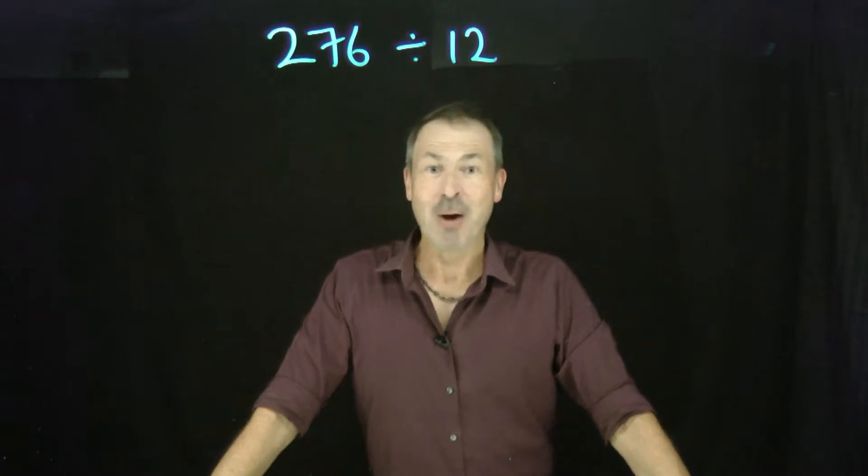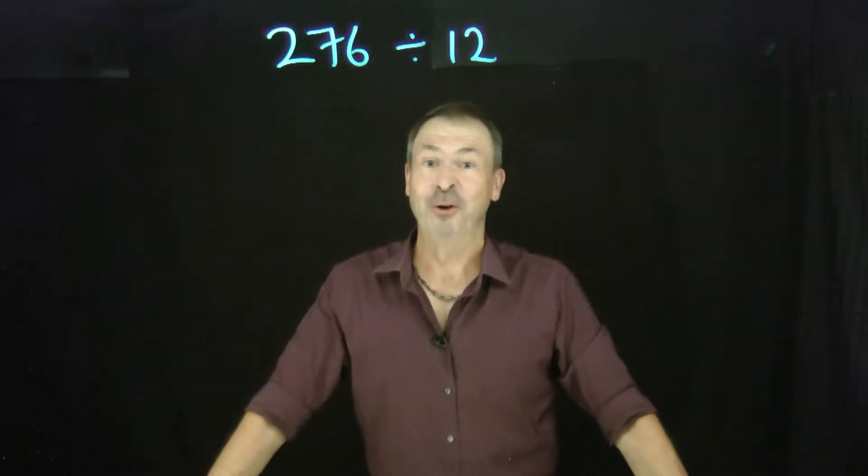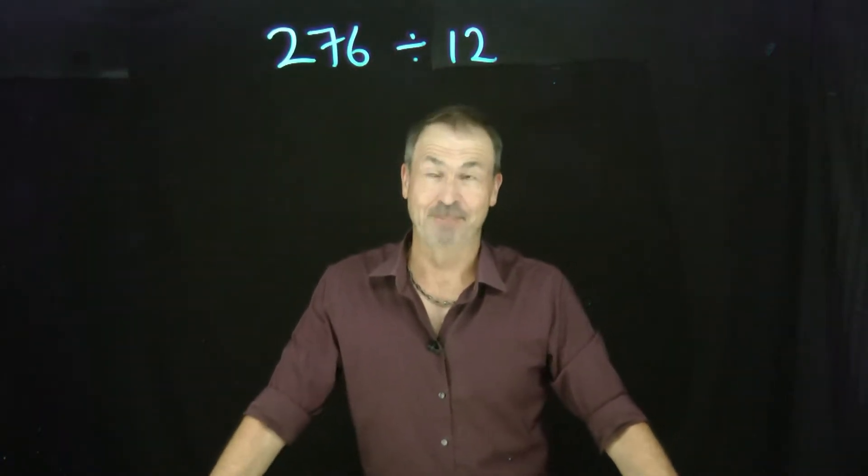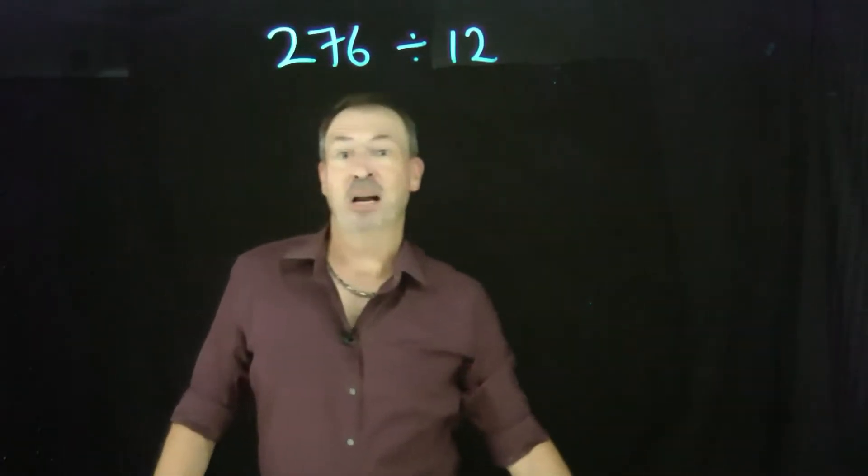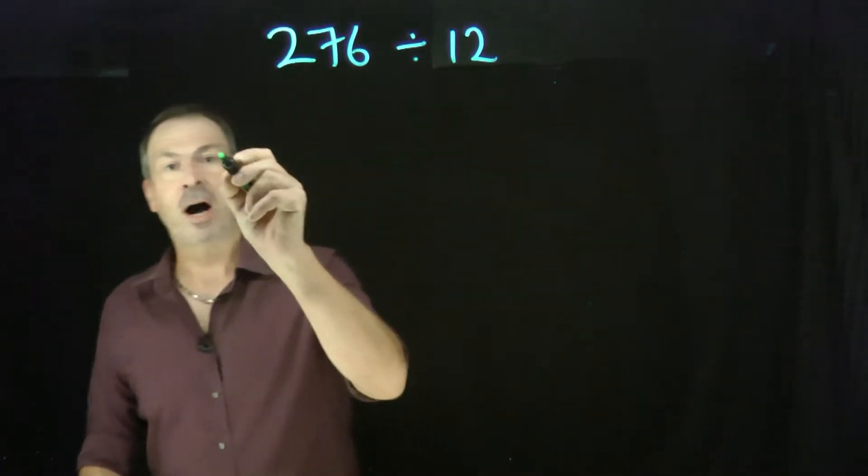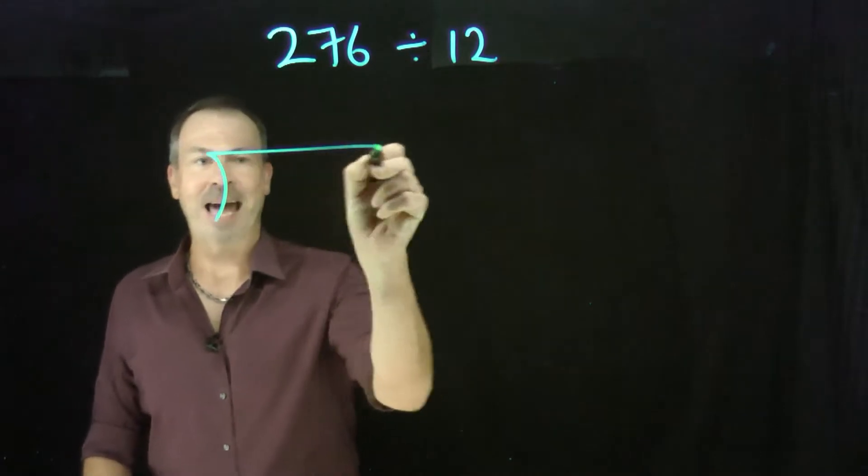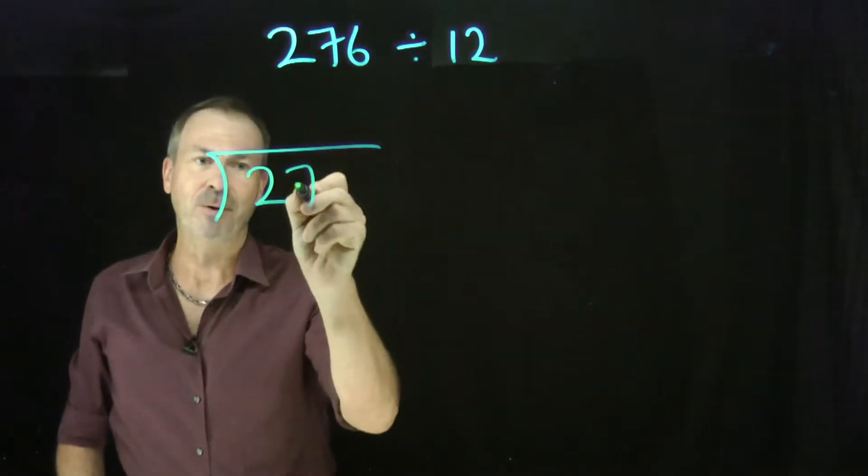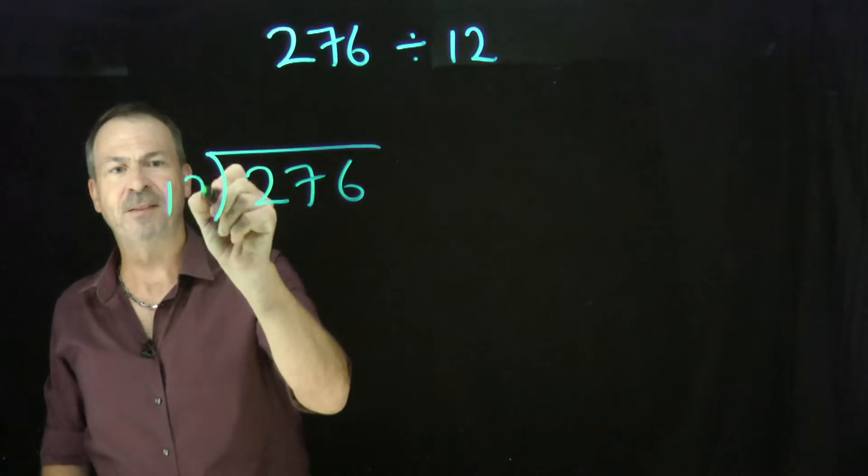Back in my school days in Australia, I was taught a very strange algorithm for doing long division. It looked like this. Suppose I want to do 276 divided by 12. I was first required to draw a funny symbol that looked like that. I had to write 276 underneath the symbol and I had to write 12 to the left of the symbol.